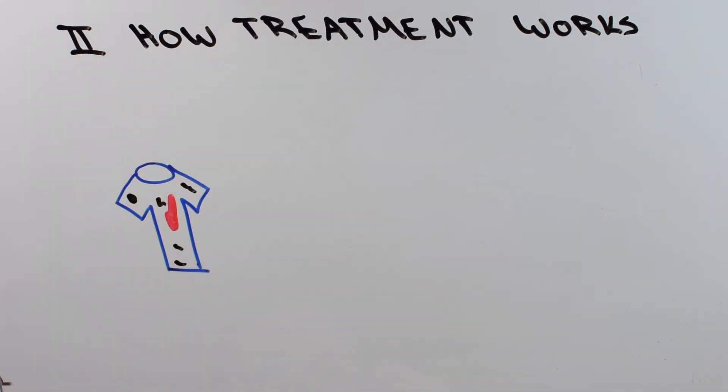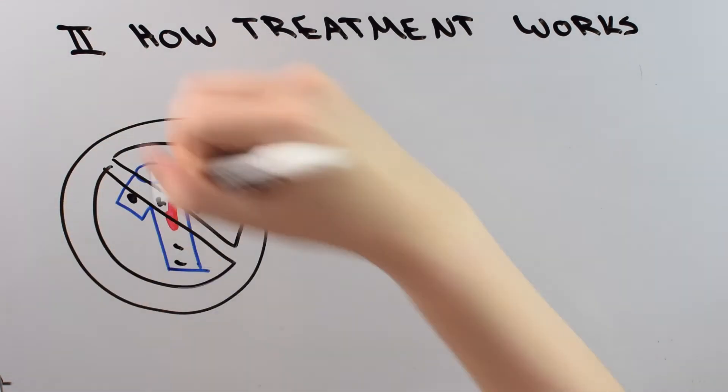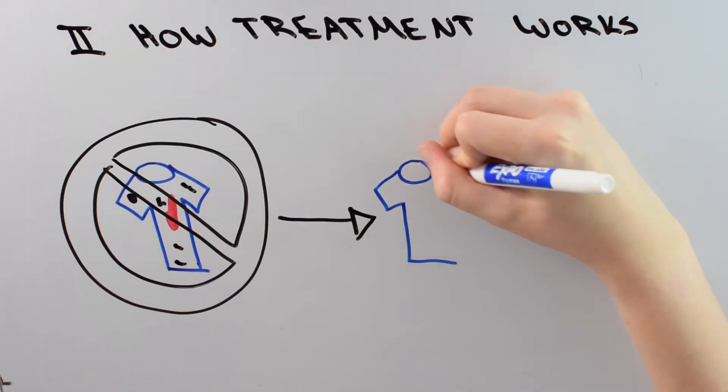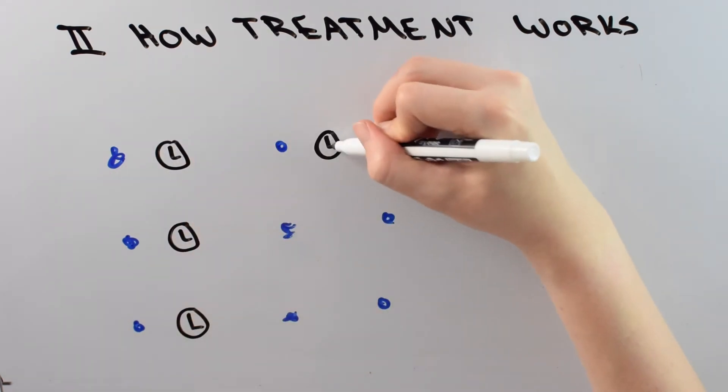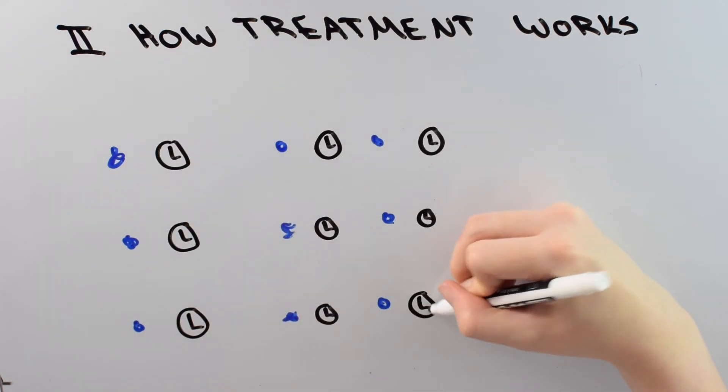And eventually, it's time for that shirt to retire. And time for you to get a new shirt. Just like your favorite t-shirt, the inhibitors get damaged over time. And so as long as you need to be treated, you need to continue taking the inhibitors over and over again.